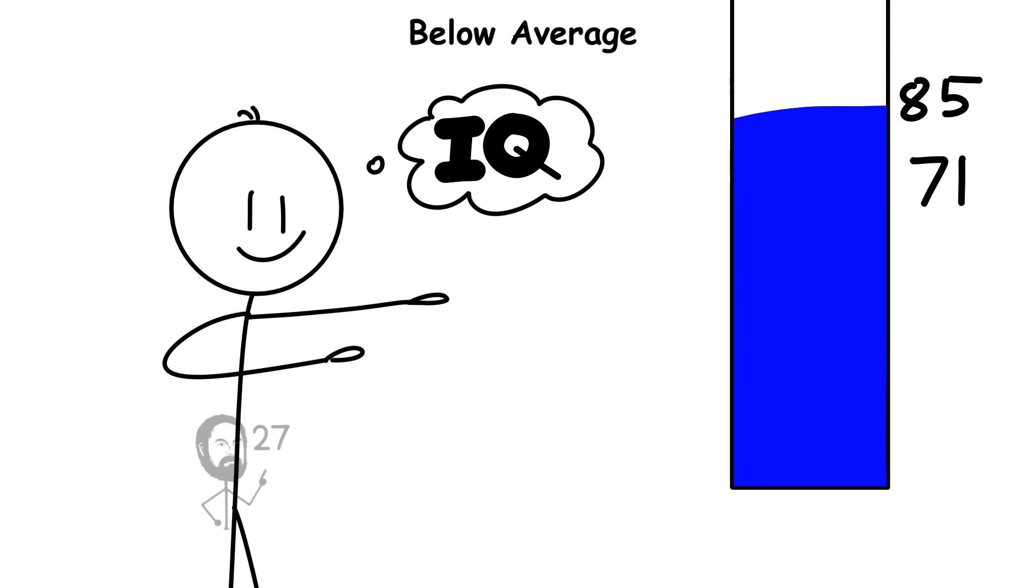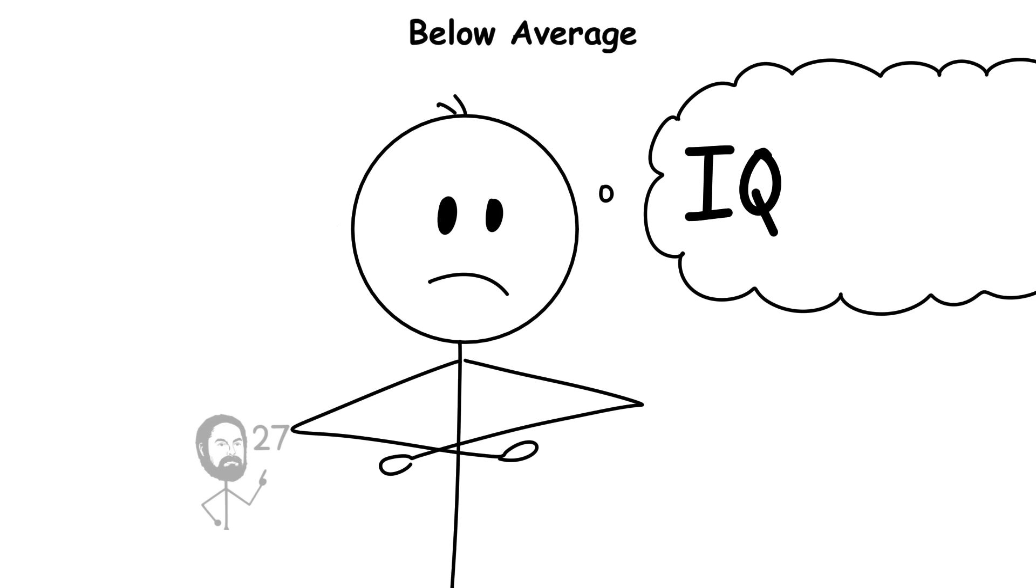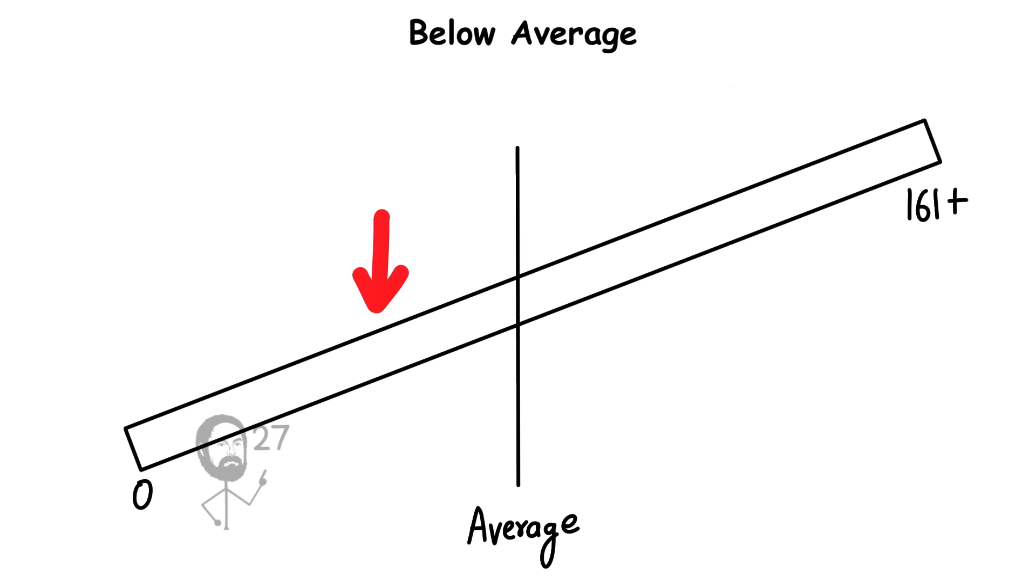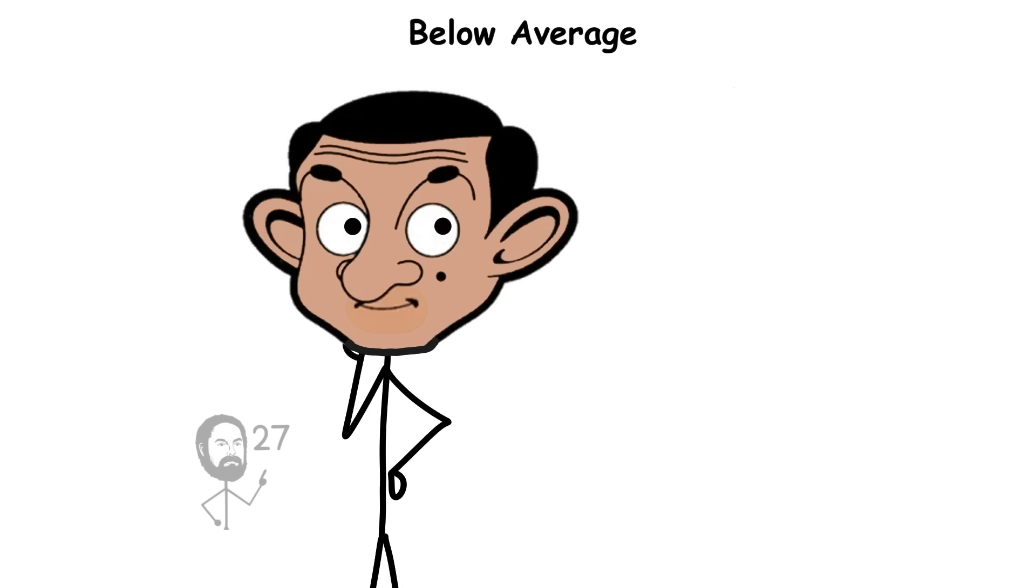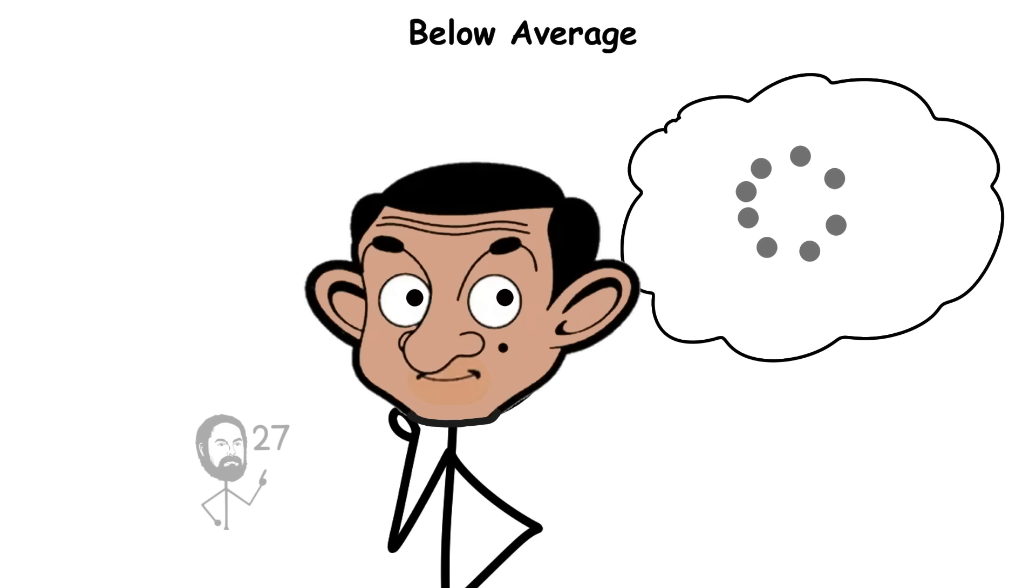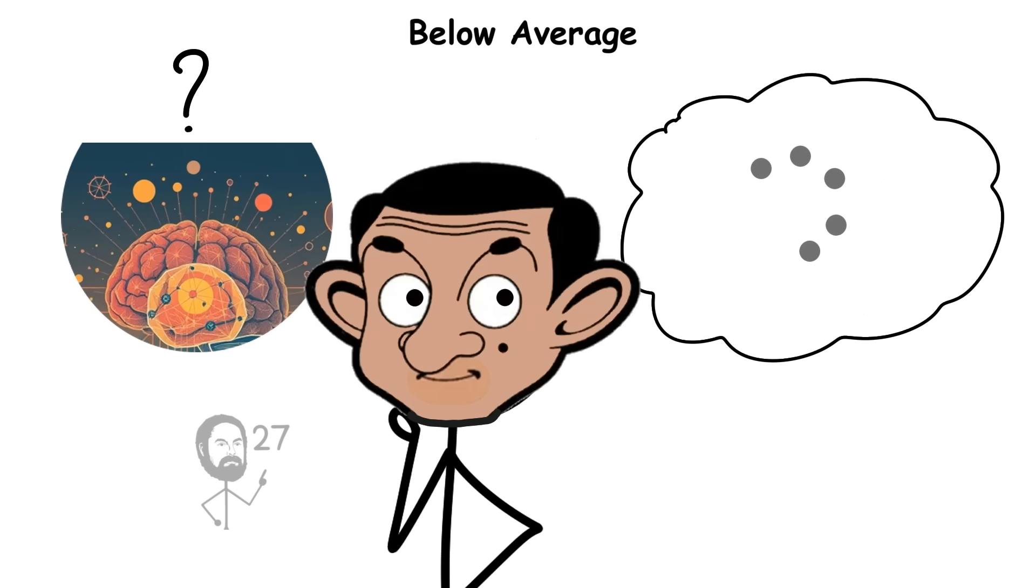Level 2. Below Average. IQ 71-85. An IQ between 71 and 85 falls just below the statistical average and represents what psychologists call borderline intellectual functioning. Individuals in this range usually develop essential life skills, but process information at a slower pace and require more time or support to grasp complex ideas.